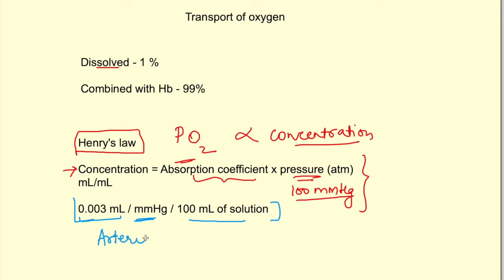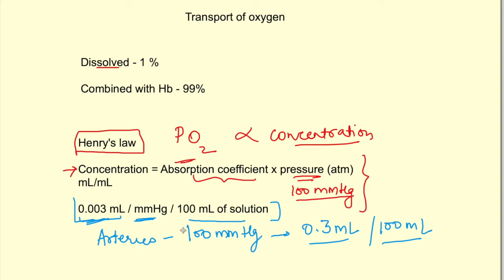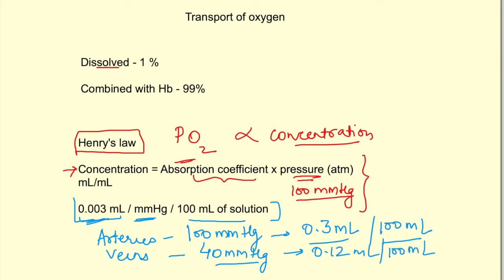In arteries, the partial pressure of oxygen is 100 mmHg, so multiplying gives 0.3 ml of oxygen per 100 ml of blood in dissolved form. For veins, the partial pressure is 40 mmHg, giving 0.12 ml per 100 ml of blood. This amount is very small — only 0.3 ml — which is why hemoglobin is so important.